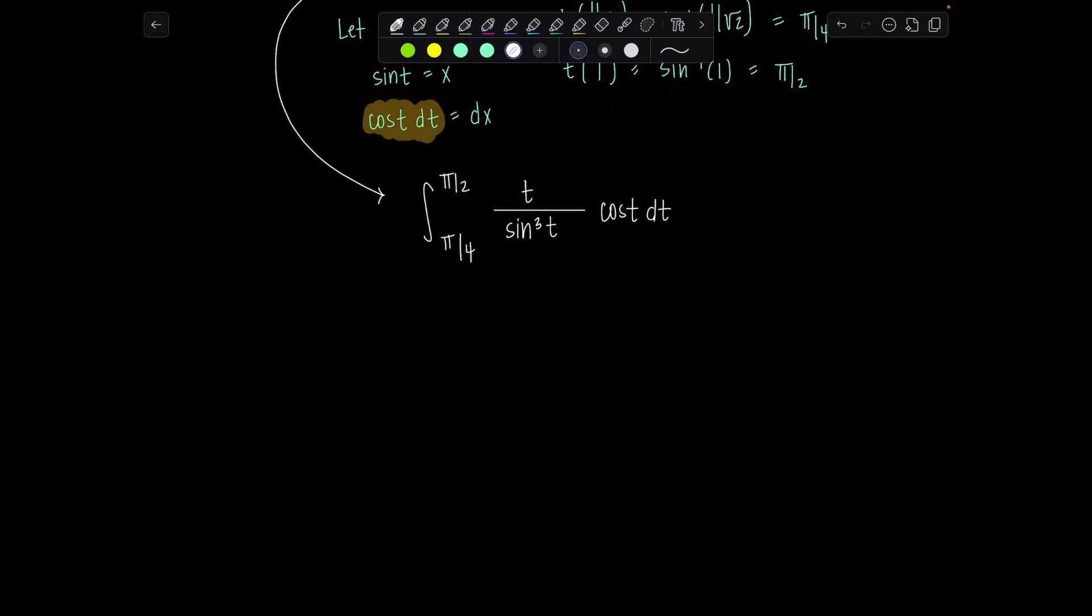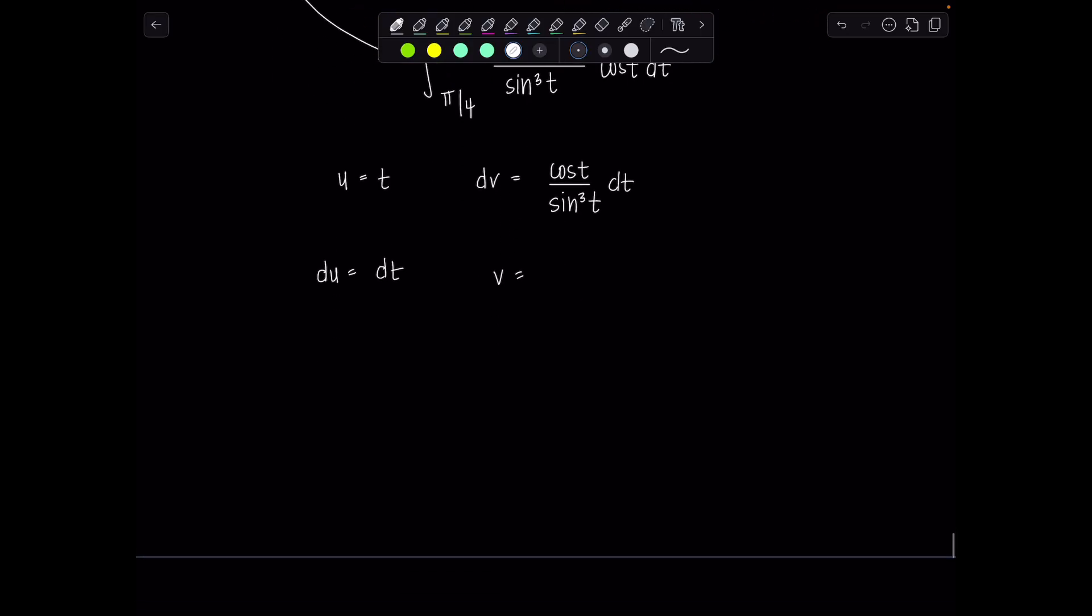So I'm going to let u be t and then dv would be the rest of the stuff, the trig stuff, which is cosine t over sine cubed t dt. So finding du is easy, that's just dt, but to find v, maybe you need to do a little side problem, or maybe not. Depending on where you're at in your math career, maybe you could do that anti-differentiation in your head. But say you can't, let's just work it out.